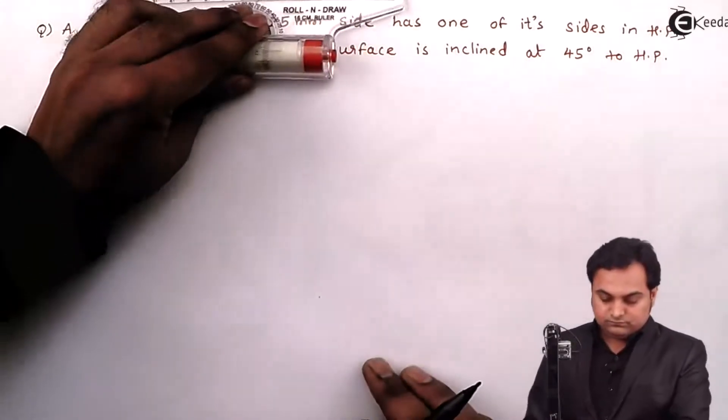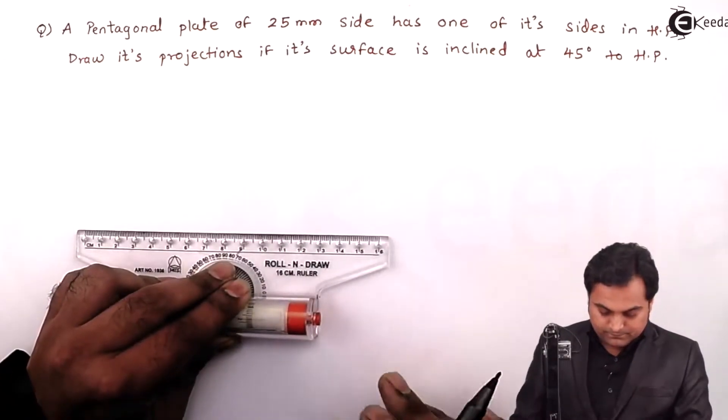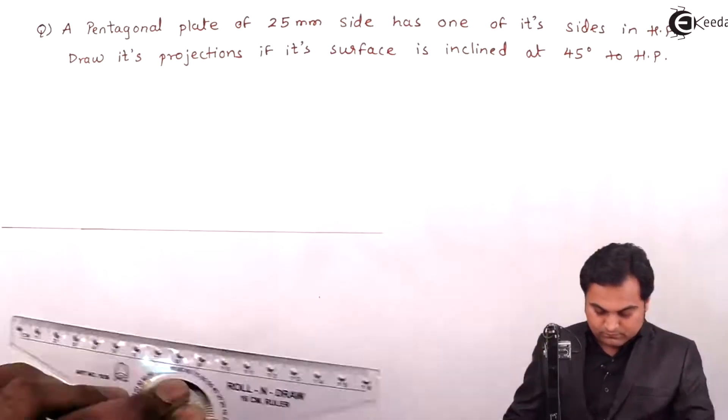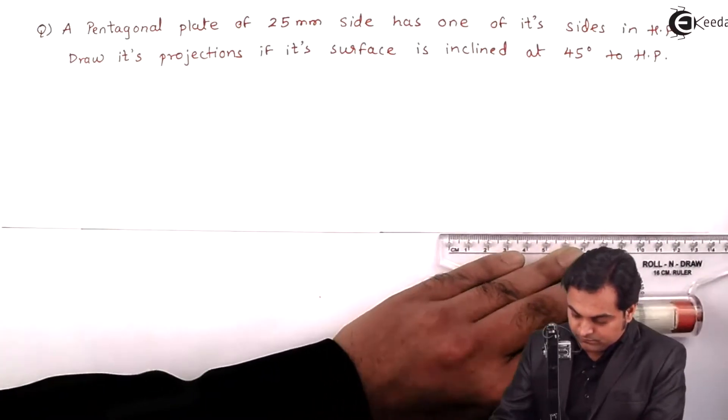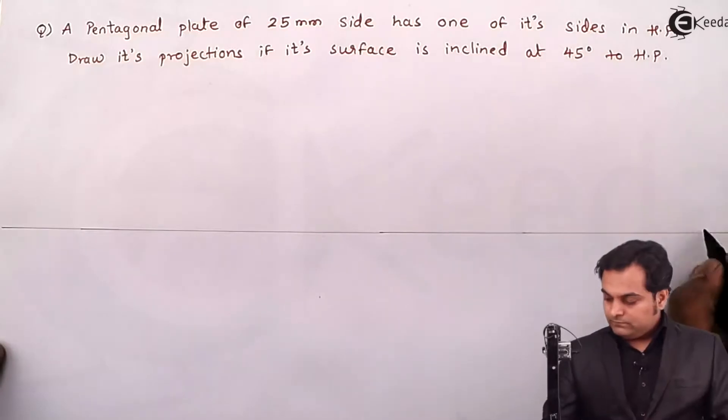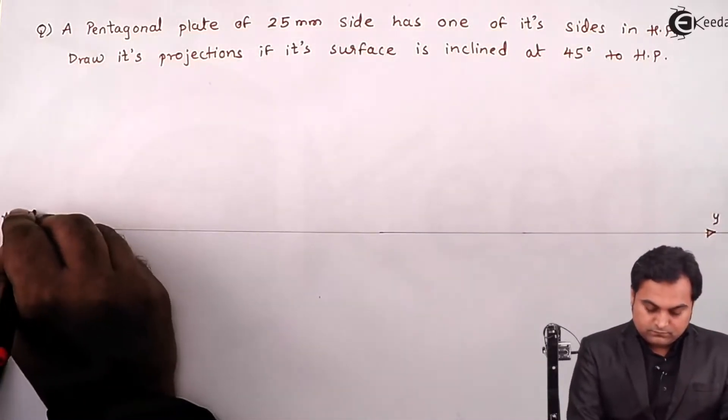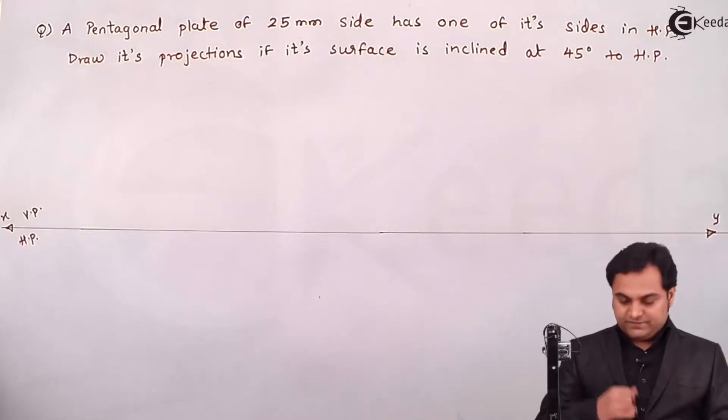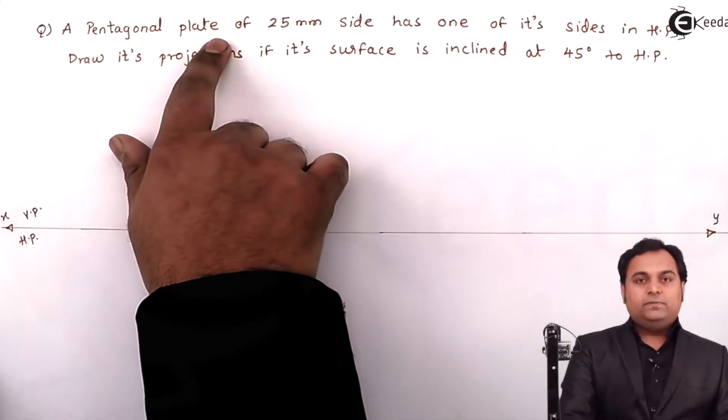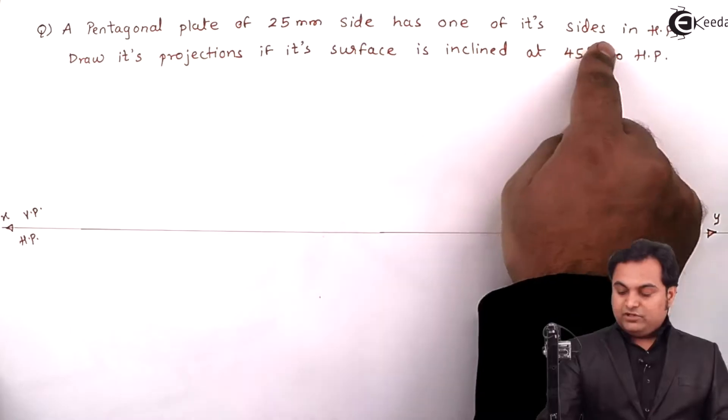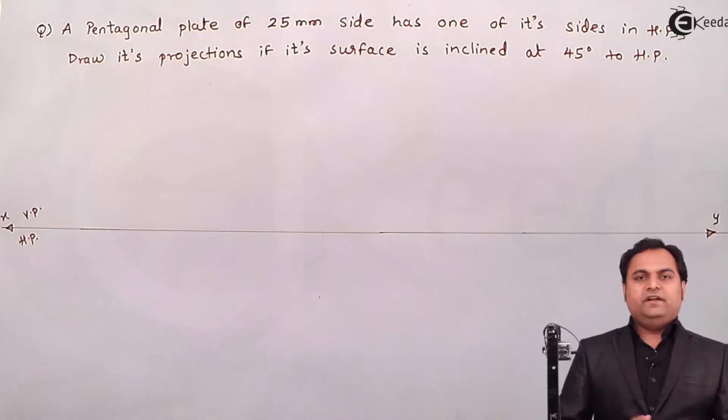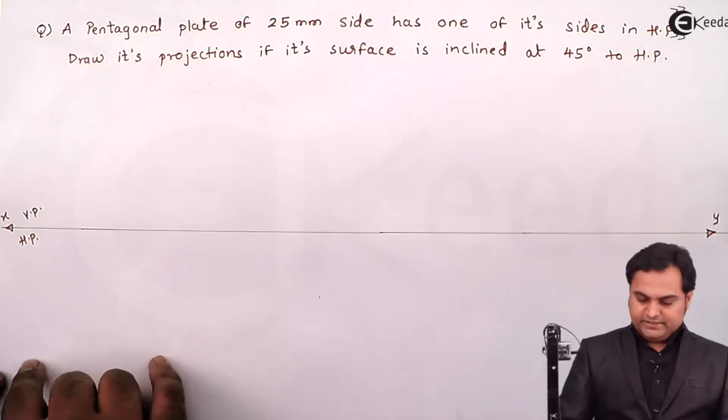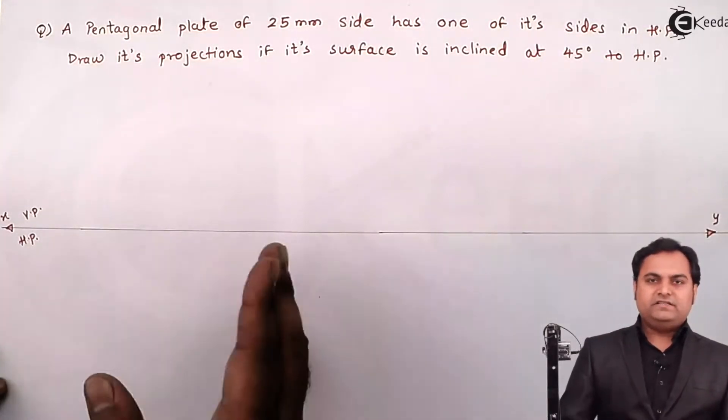Here in this case, a pentagonal plate of 25mm side has one of its sides in HP. If one of the sides is in HP it means that the entire pentagonal plate is in HP. So I draw it in HP and it is resting on one of its sides.